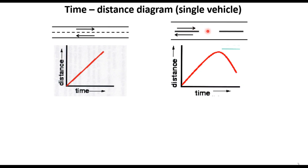Similarly, consider a vehicle moving and then deciding to take a U-turn at a median opening. If you look at the trajectory, the time-distance diagram is a straight line representing the constant approach speed, and then it slows down and takes a U-turn. So this is the trajectory of a vehicle taking a U-turn at a median opening.